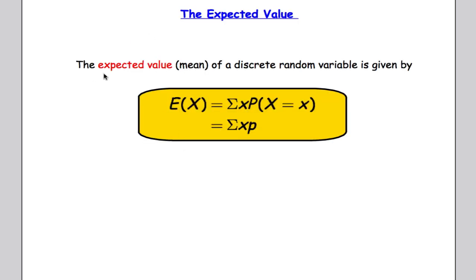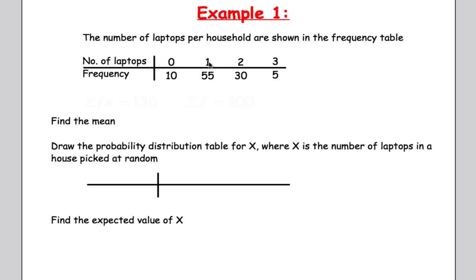Let's talk about the mean, or what's known as the expected value of a discrete random variable. The expected value, which is the mean, is given by the formula: the sum of X times the probability of each event. So we take each particular value, multiply it by its probability, and sum them all together.